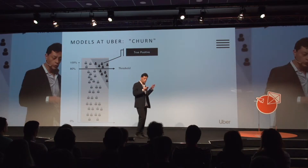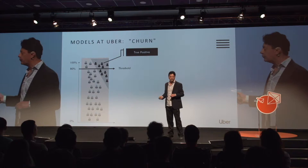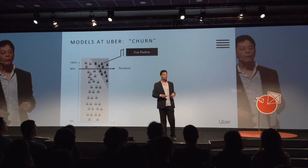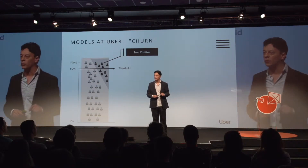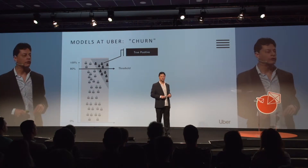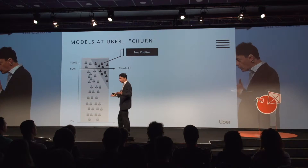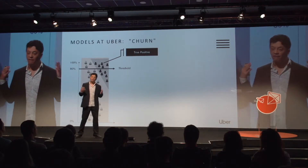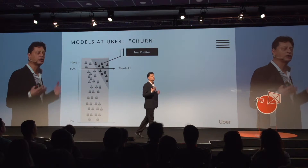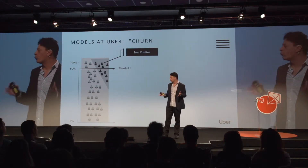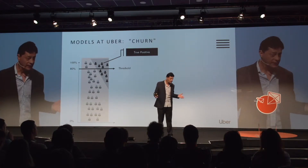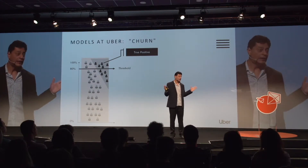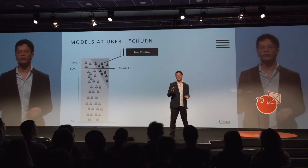Now you run the machine learning model. The model gives you a ranking of people, and you only target the top 20%. You're targeting only 20% of your customer base, and you catch five of the churners. Isn't that a much better marketing investment? Targeting 100 to catch 10, versus targeting 20 to catch 5? We are improving the effectiveness of our campaigns by 5x just by running the machine learning model, not using anything magical — just machine learning as a very powerful classification tool.